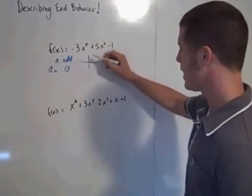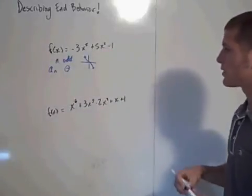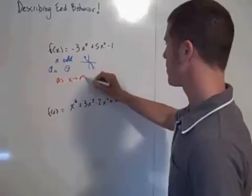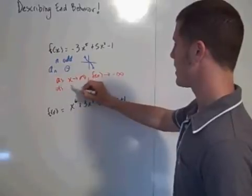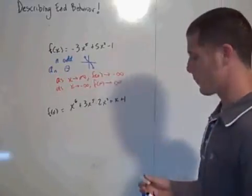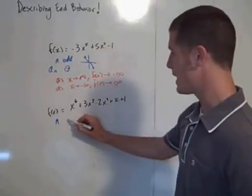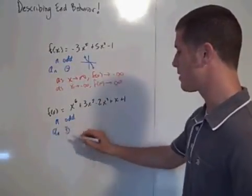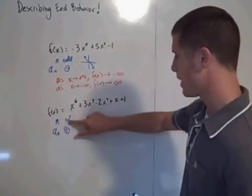So the graph is going to look something like — degree is odd, negative — it's going to look something like this, not exactly, but some transformation of that. To describe the end behavior here: as x approaches infinity, f of x approaches negative infinity. The second function — the degree is 6. Oh, excuse me, 6 is obviously even, and the leading coefficient is 1, that's positive, so a sub n is positive.